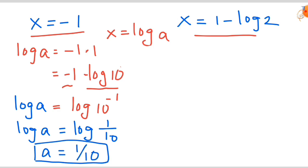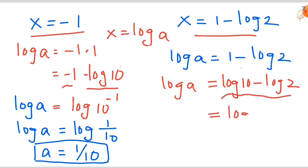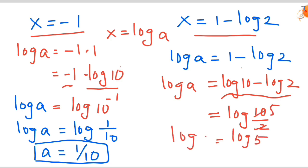Now finding the second a value using x = 1 minus log 2: log a = 1 minus log 2. Since log 10 = 1, this is log 10 minus log 2, which is in the form log(a/b), giving log(10/2) = log 5. So log a = log 5, and applying anti-logs: a = 5. Therefore our two values are a = 5 and a = 1/10.